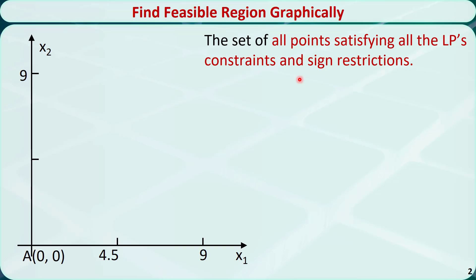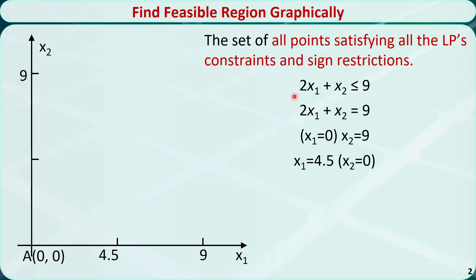For a linear constraint with two variables, we can show the feasible region graphically. For example, we have a constraint 2x1 plus x2 is less than or equal to 9. This constraint divides the two-dimensional space into two parts: one part is the feasible region and the other part is the infeasible region. In order to find out which part is feasible, we change this inequality to an equation and draw this line in the two-dimensional space.